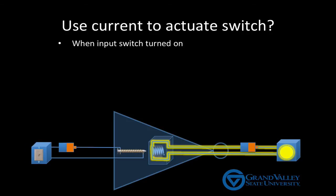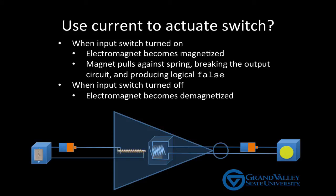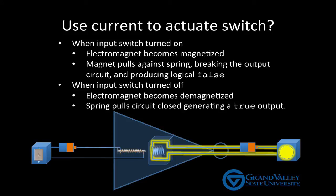When we turn the switch ON, the electromagnet becomes magnetized. And that magnetic force then pulls against the spring and breaks the circuit, thereby producing a logical false output. When the input switch is turned OFF, current no longer flows through the input circuit, which means the electromagnet becomes demagnetized. And without the magnet pulling against the spring, the spring pulls the circuit closed, again generating a true output.